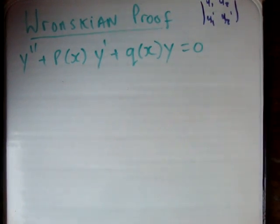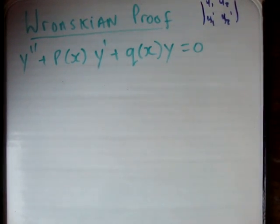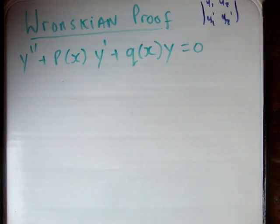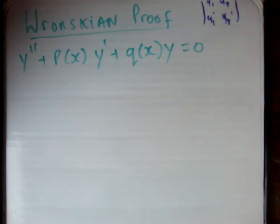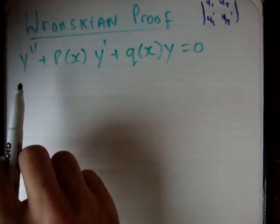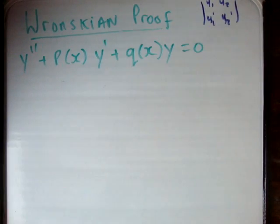In this video, I'm going to show you how to do a proof of the Wronskian. The first thing I'm going to define is the differential equation of second order, and I'm going to say that there is a coefficient of 1 for the y double prime term.